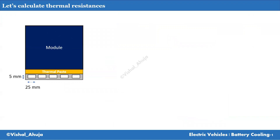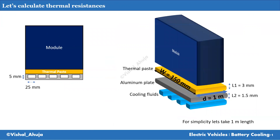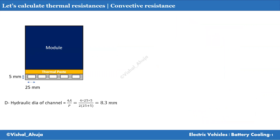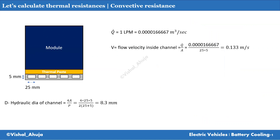For this consideration, let's consider one channel has a cross section of 5 mm by 25 mm. In the 3D geometric representation, consider 150 mm as the width of that section. We have a thermal paste of 3 mm thickness, below which there is a 1.5 mm thick aluminum plate, below which there are some cooling channels. For simplicity, we are taking a 1-meter depth of the system. Let's calculate the hydraulic diameter, then for 1 LPM flow in one section, we calculate the flow rate and velocity in that channel.